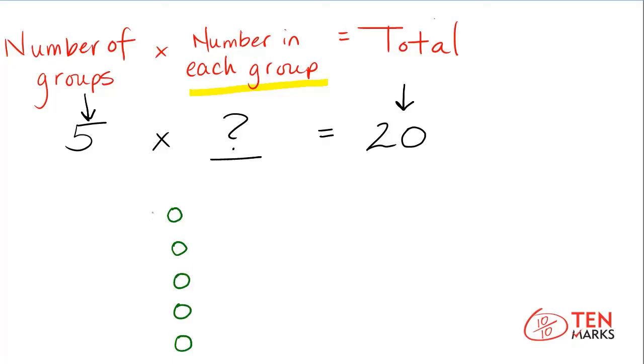Once you have your first five counters, you can go in and continue to add counters to each row until you have a total of twenty. If I add five more, I have a total of ten. If I add five more, I'll have a total of fifteen. If I add five more, I'll have a total of twenty counters in all.